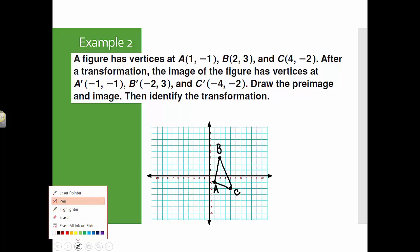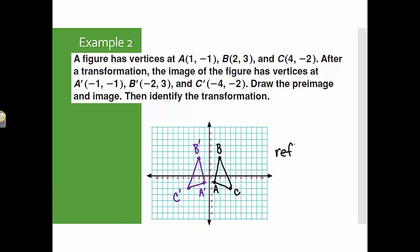I'm going to do my second figure in a different color. So it looks like we've got negative 1, negative 1, A prime. We've got negative 2, 3, B prime. And negative 4, negative 2, C prime. And there is the image, pre-image and image. And I am going to say that that appears to be a reflection or a flip.